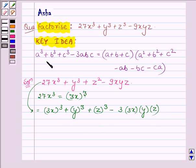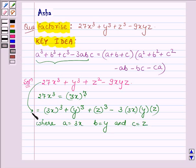Which is in the form of the left hand side of the identity where a is equal to 3x, b is equal to y and c is equal to z. And thus applying this identity.